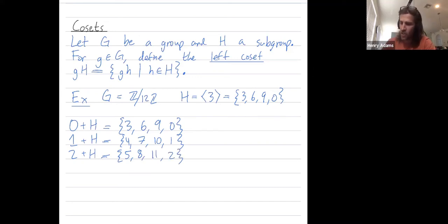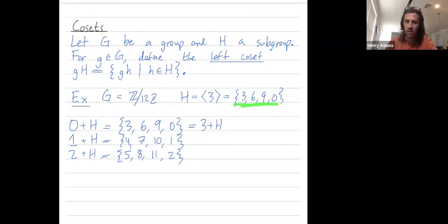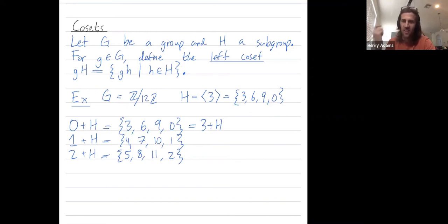You can check that the coset 0 plus H is the same as the coset 3 plus H, because adding 3 to each of these elements still gives the same list of elements—reordered, but sets don't care about order. And this is also 6 plus H.